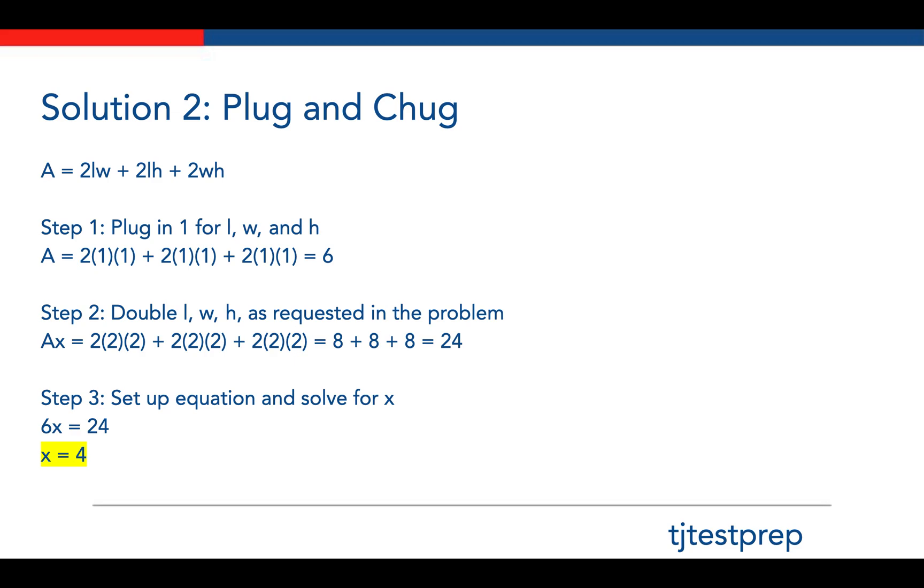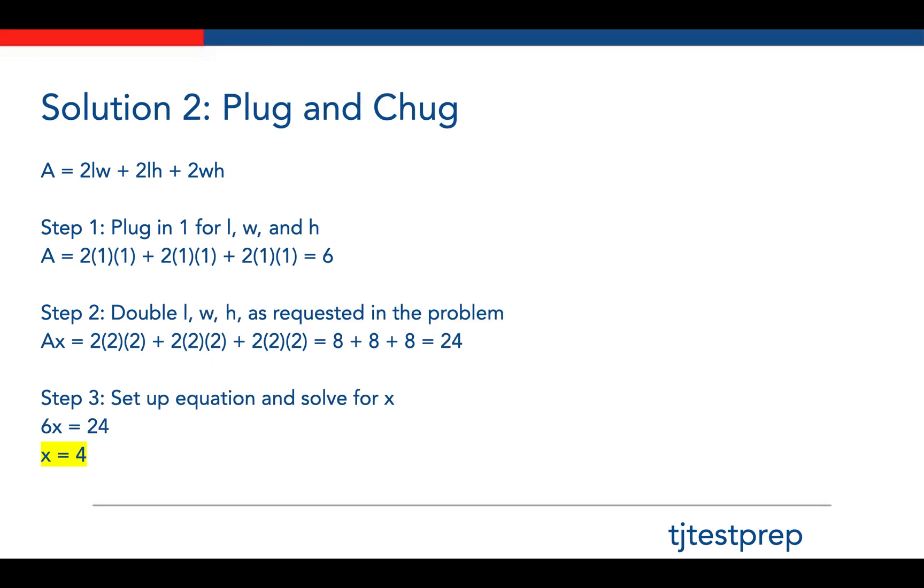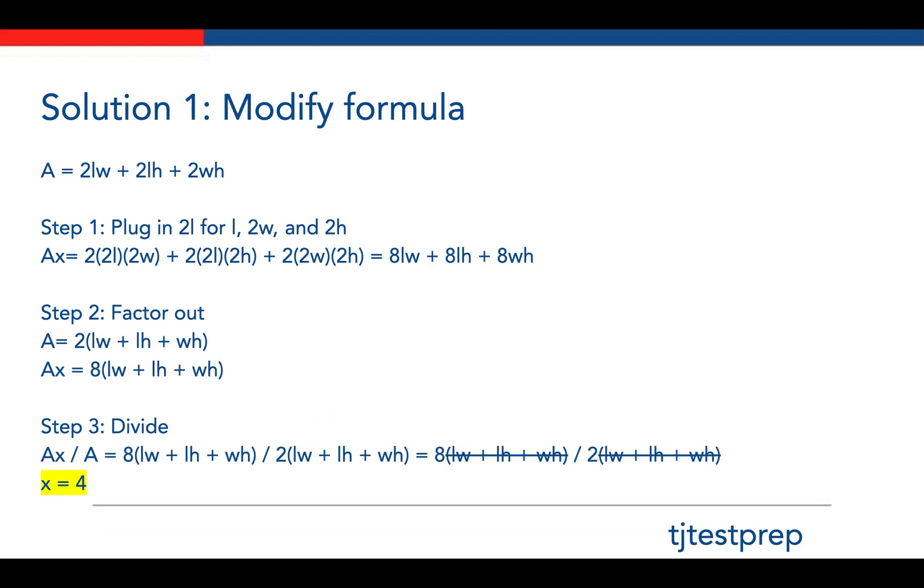A second way of solving it is to plug in a number for the formula and plug in a different number for the modified formula. This is called plug and chug. This solution may be slightly faster than the modify formula method, as in the modify formula method, you have to write a lot down. In general,